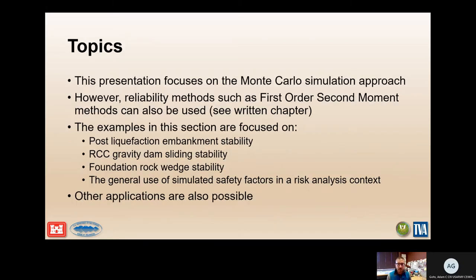This presentation focuses on the Monte Carlo simulation approach, where we run iterations of the same factor of safety problem 10,000 times or however many we choose, randomly selecting one sample of each input for each iteration according to the probability distribution selected. All those iterations build a probability distribution of the answer that tells us, for example, how many times the answer yielded a factor of safety below one and how many were above one.